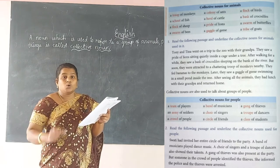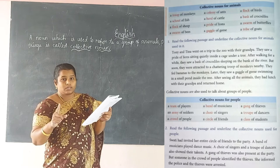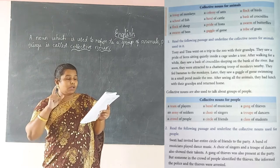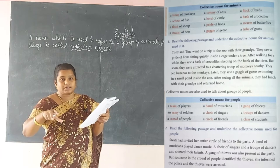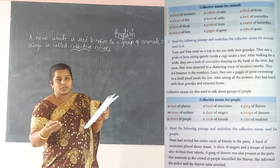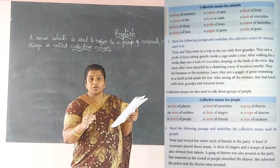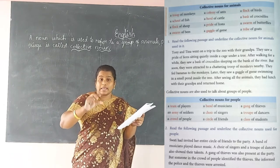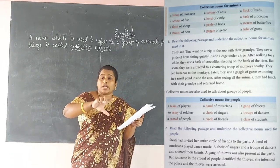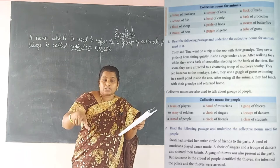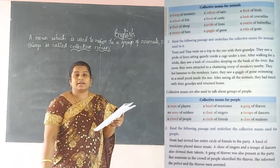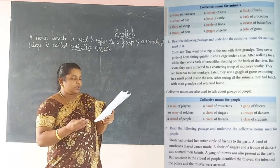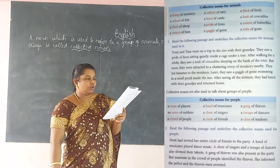Later they saw a gaggle of geese. 'Goose' means one bird; 'geese' is the plural form, meaning more than one. So when the geese are standing in a group, we use the word 'gaggle' — a gaggle of geese. Underline the word 'gaggle.' There are no more collective nouns after that in the passage.